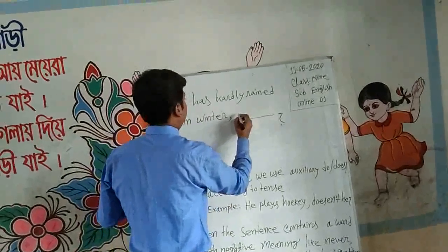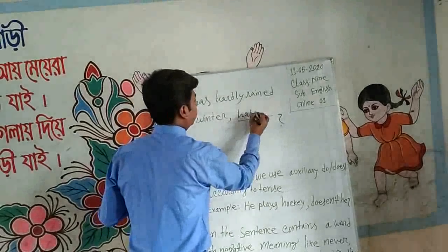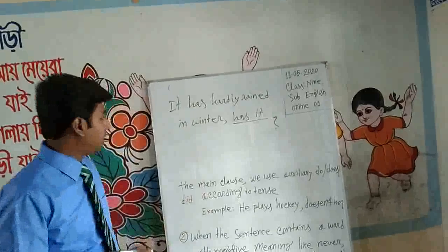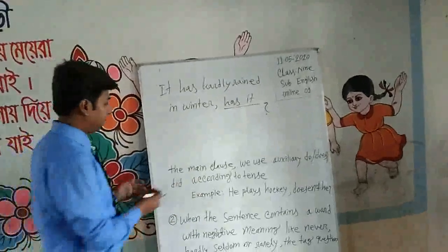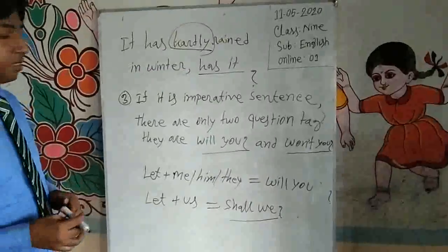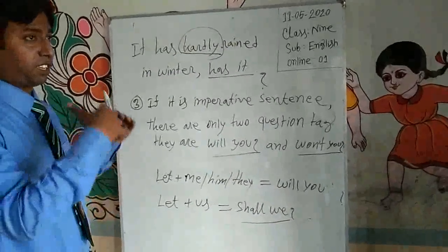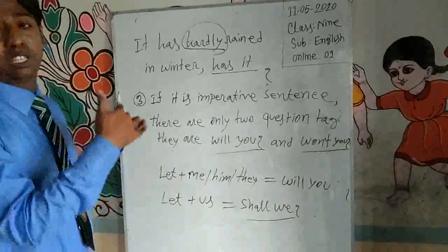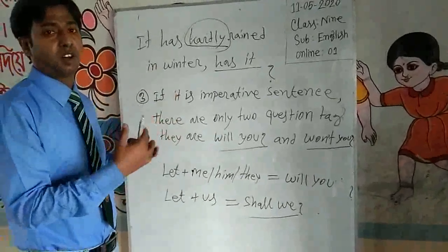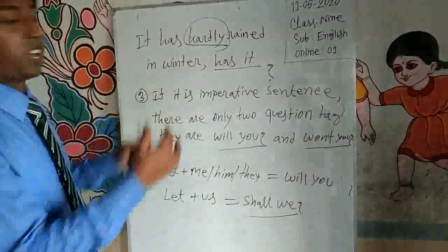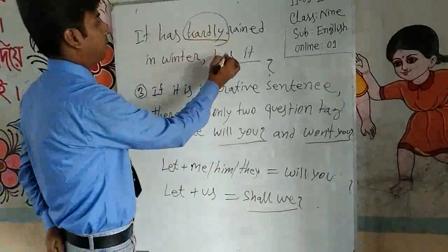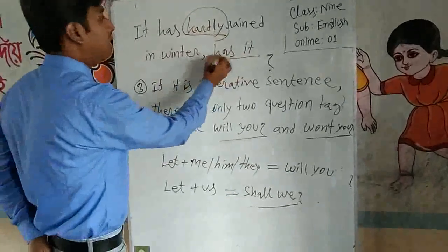So the affirmative tag for 'It has hardly rained in winter' is 'has it?' If a sentence contains a word with negative meaning like 'hardly', 'rarely', 'seldom', or 'scarcely', we use an affirmative tag: 'has it?'